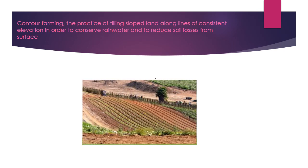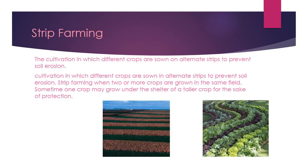Contour farming is the practice of tilling sloped land along lines of consistent elevation in order to conserve rain water and reduce soil losses from the surface. Strip farming is another method being adopted to conserve soil. This is cultivation in which different crops are sown on alternate strips to prevent soil erosion. In strip farming, when two or more crops are grown in the same field, sometimes one crop may grow under the shelter of a taller crop for protection.